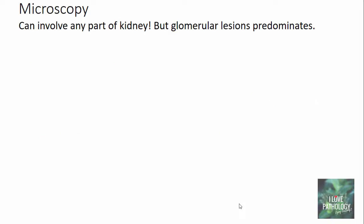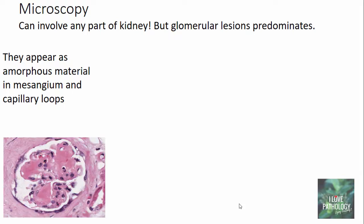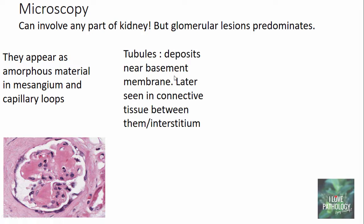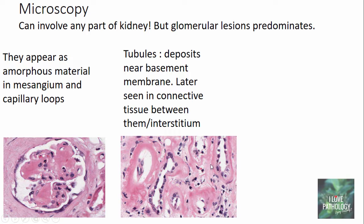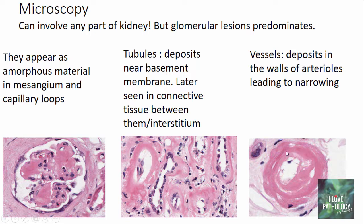Microscopically, amyloidosis can involve any part of the kidney, but glomerular lesions predominate. Amyloid appears as amorphous material in the mesangium and capillary loops. In the tubules and interstitium, deposits are initially seen near the basement membrane of tubular epithelial cells, later extending into the interstitial tissue. If vessels are involved, amyloid is deposited perivascularly or within the walls of arteries and arterioles, leading to narrowing of the lumen.